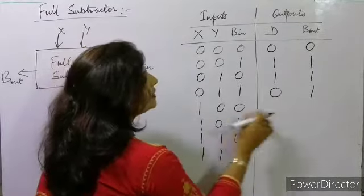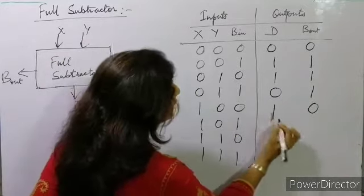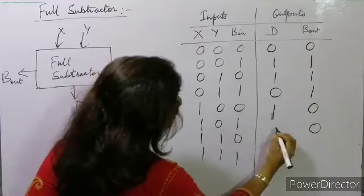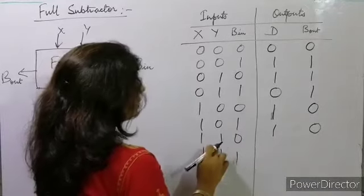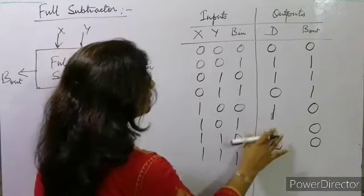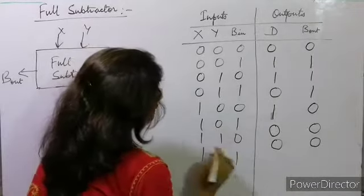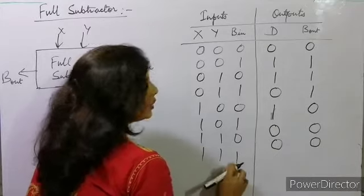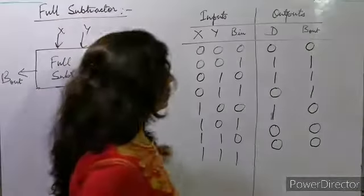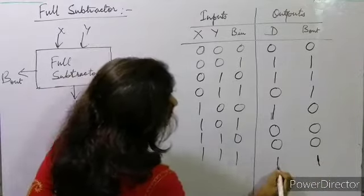Now 1−0−0: no borrow needed, difference 1, borrow 0. Now 1−0−1: difference 0, borrow 0. Now 1−1−0: no borrow needed, difference 0, borrow 0. Now 1−1−1: we need to subtract 2 from 1, so borrow 1. With borrow it becomes 3 minus 2, difference 1, borrow 1.